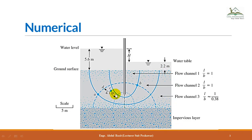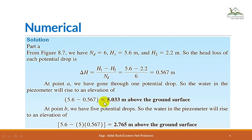For point B, from the diagram it is clear that to reach point B we must pass through five potential drops — the first, second, third, fourth, and fifth. So point B lies on the fifth equipotential line, and the piezometric head equals 5.6 minus 5 multiplied by the potential head loss per drop, which gives 2.768 m above the ground surface.